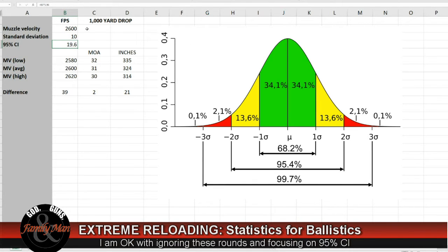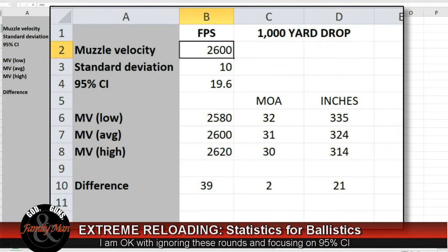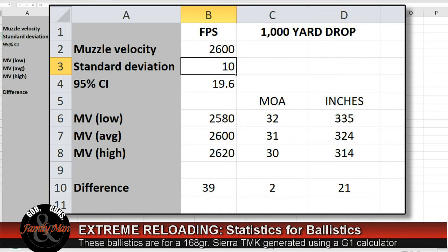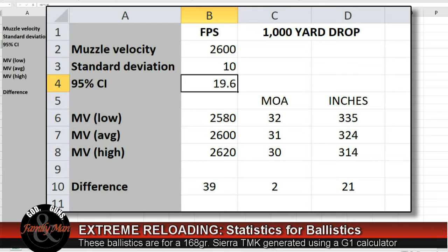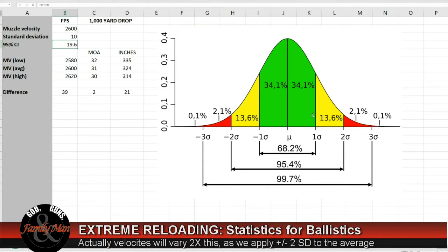If we draw our attention over here, we're going to simulate that we have a rifle, a round, with an average muzzle velocity of 2600 feet per second, and a standard deviation of 10 feet per second. With 95% confidence, we see that the rounds are going to vary by almost 20 feet per second. That's this area right over here.